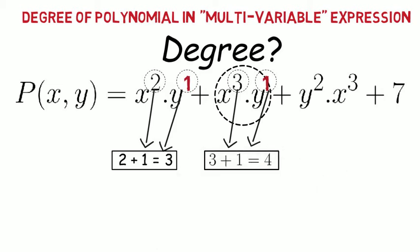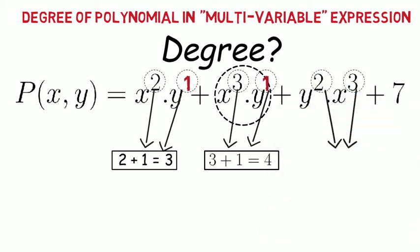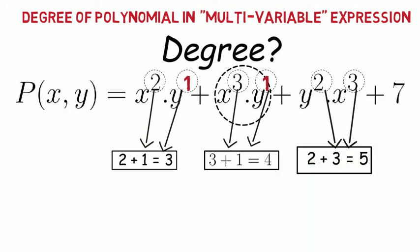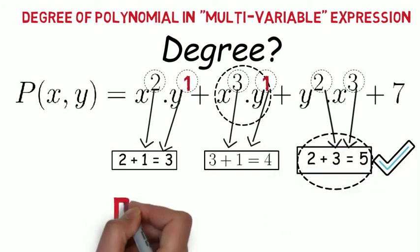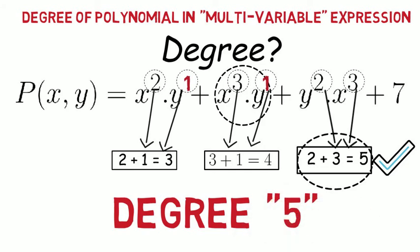Now move on to third term: x cube and y square, means 3 times x and 2 times y, or 3 plus 2, or total 5 variables. Now, which term has the highest combined exponent power? It is third term, which is having 5 as highest combined exponent power. Hence, the degree of this multi-variable polynomial is 5. Remember, we just need to add the variable power in order to find the degree of polynomial in case of multi-variable expression.